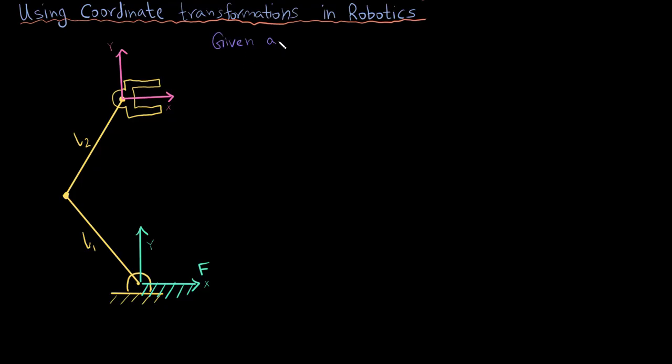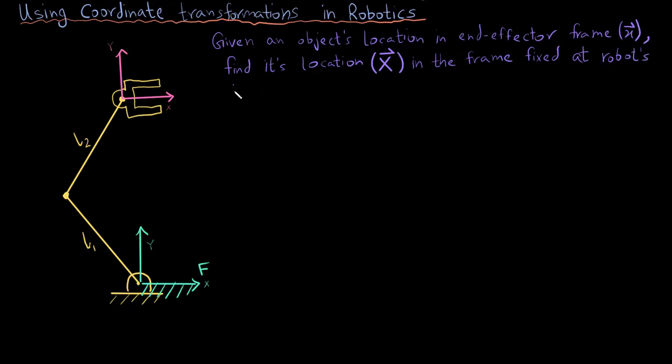Now the question is that I am given the position of an object with respect to the end effector frame and I now need to find the position of the same object with respect to the fixed frame or the frame which is fixed to the base of the robot. So the question is how do I go from the small x to the big X.